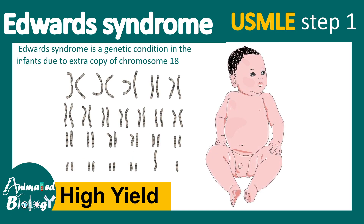In this video, we'll be talking about Edward syndrome. Edward syndrome is a genetic condition in which infants have one extra copy of chromosome 18, and this extra copy of chromosome 18 causes a lot of problems.